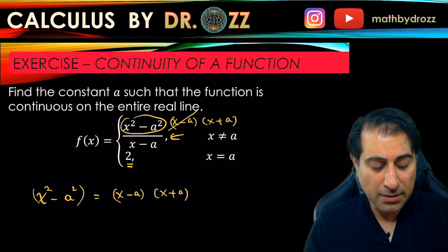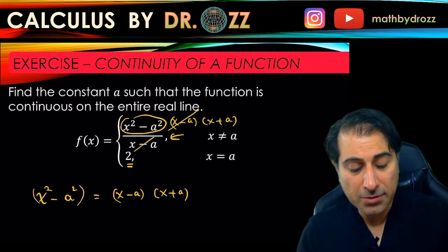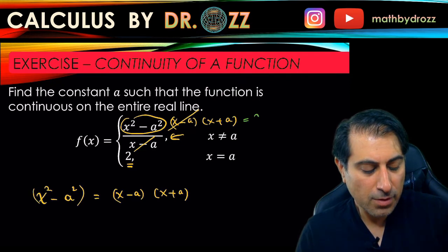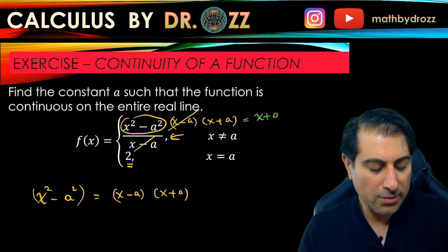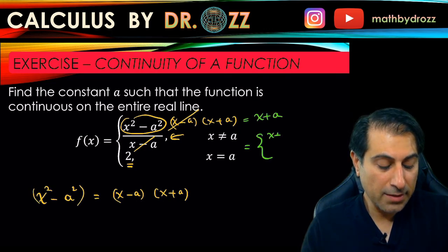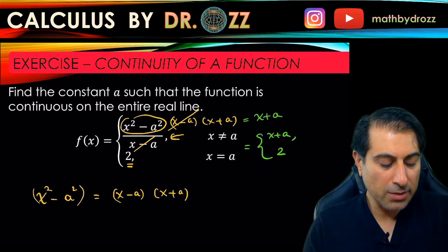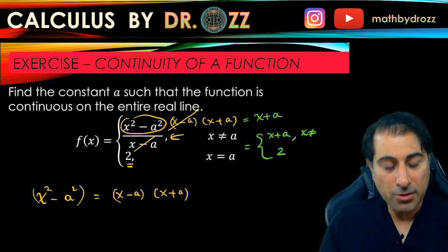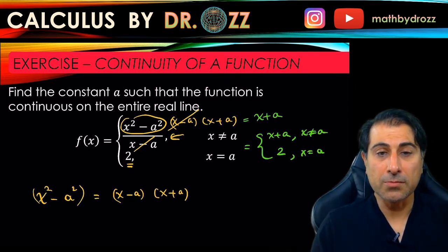the top piece can be simplified to just x plus a. So essentially what I'm saying is this piece is x plus a, the bottom piece is 2, and this is x plus a whenever x is not equal to a, and this piece is equal to 2 whenever x equals a.